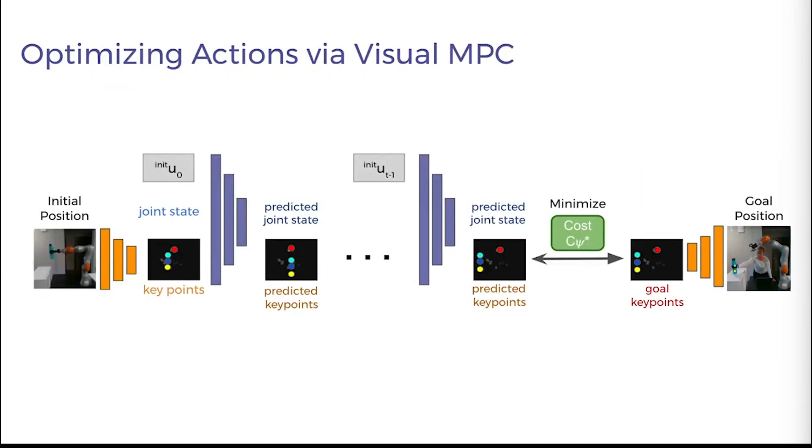This pipeline stitches together several components. These include a keypoint detector that detects pixel positions roughly corresponding to the object in the initial image.